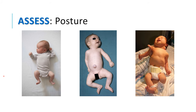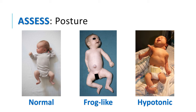How to assess posture in a child: the normal child shows flexion attitude of all joints. The floppy infant shows a frog-like posture with hips externally rotated and depressed tone. The hypotonic child requires extra support to the neck and head to maintain airway patency — the head, neck, and arms all fall back. This is called a hypotonic child.